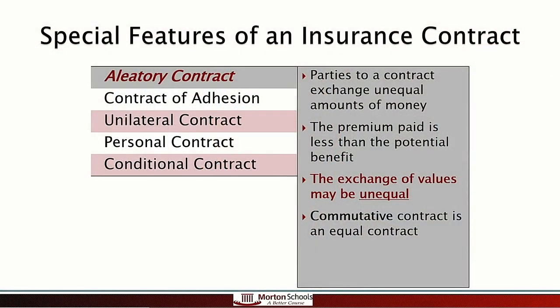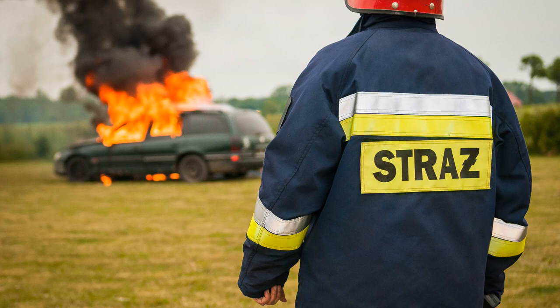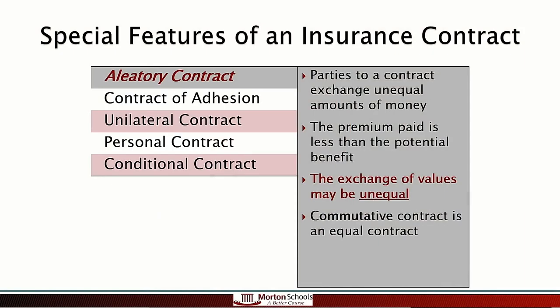Let's jump into it starting with aleatory. What is an aleatory contract? An aleatory contract is a contract that is unequal — an unequal exchange of values with an element of chance. Let's say you go to your car insurance agent's office and sign up for an auto policy. You walk out with a policy covering your car immediately. If you get into an accident pulling out of the parking lot, the fact that you've only made one premium payment has no bearing on the amount of the claim.